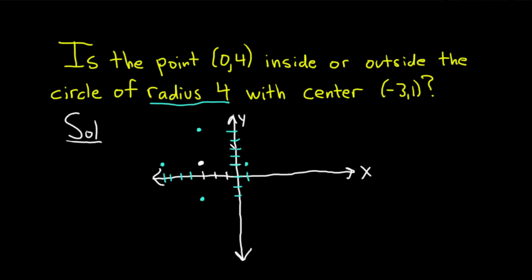So from the center of the circle, that's (-3,1), we went left 3 and up 1. We traveled a distance of 4 because that's the radius, and we went up, down, left, and right. The reason we went those directions is because it's easier to go up, down, left, and right because you can just count.